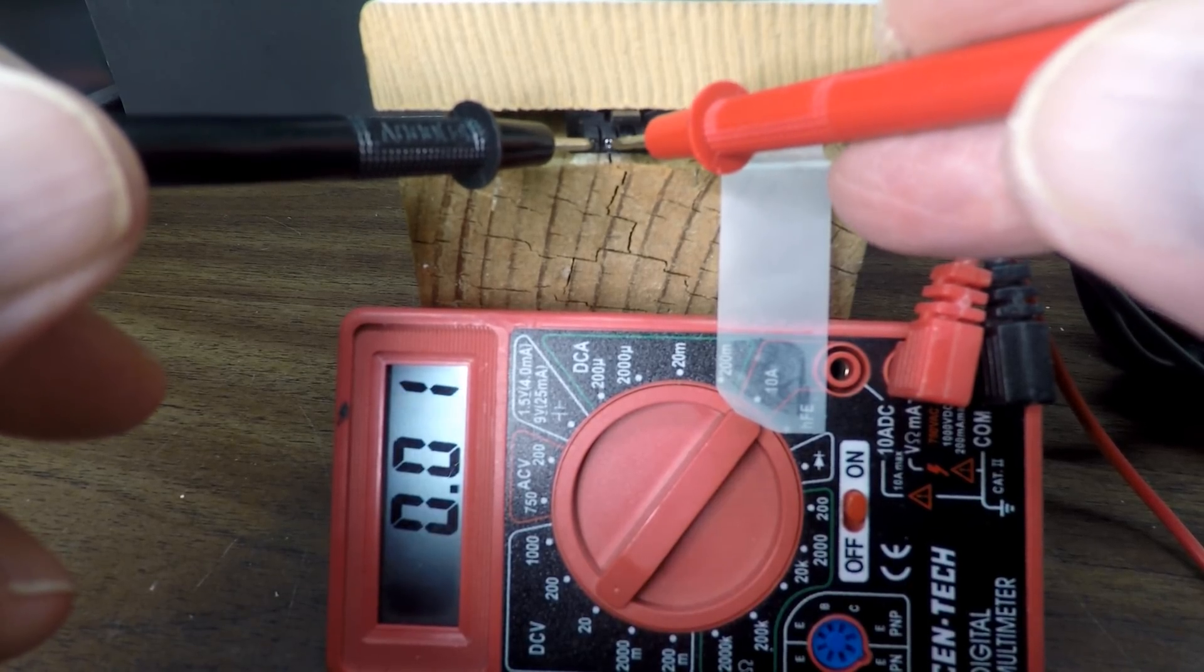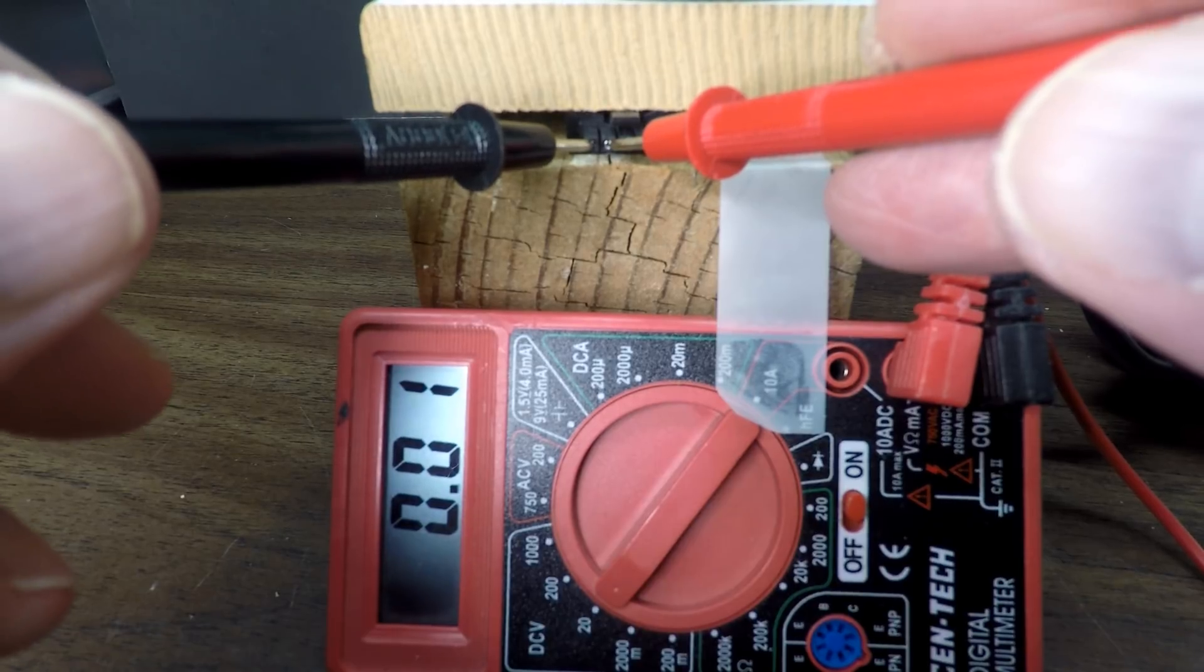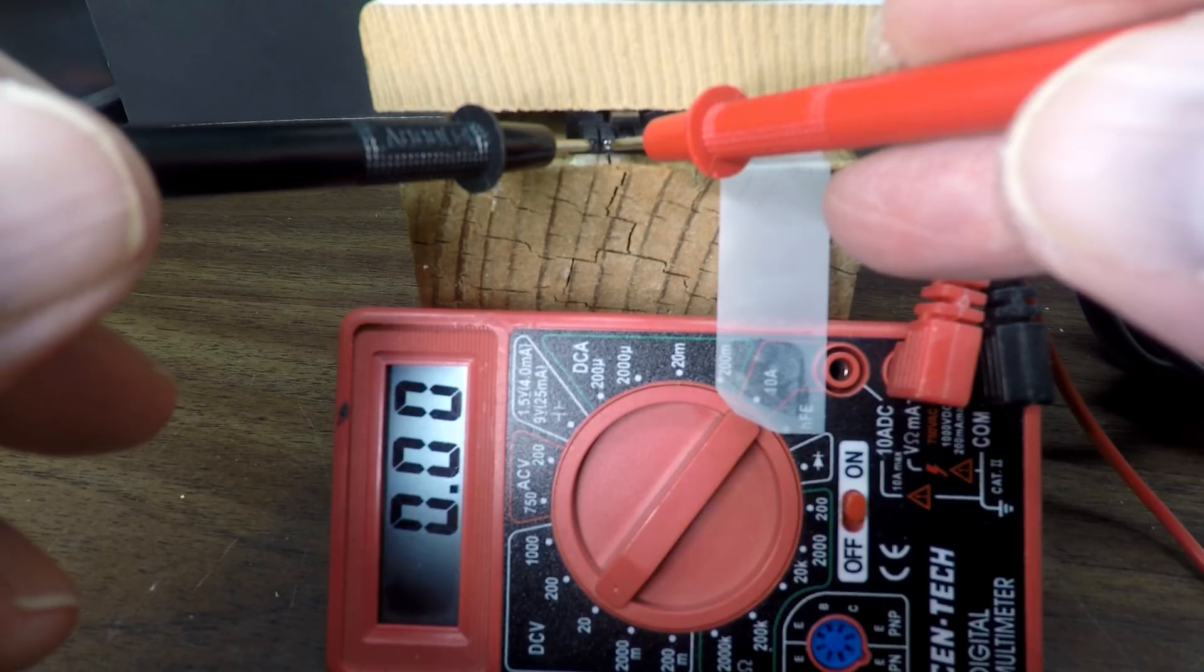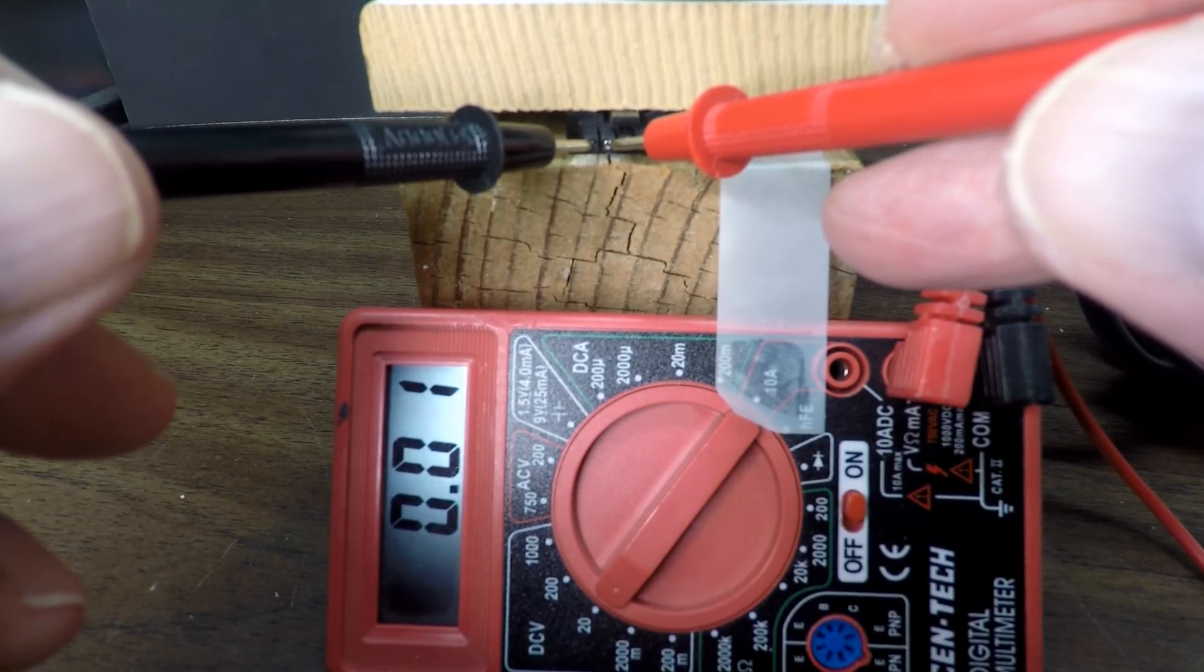And then if we come here, we get 0 one more time. So that is working out the same as with the other battery, except it's higher voltages because it's a different battery.